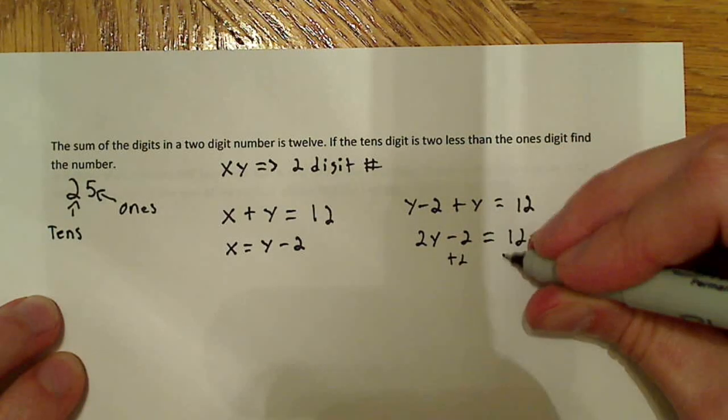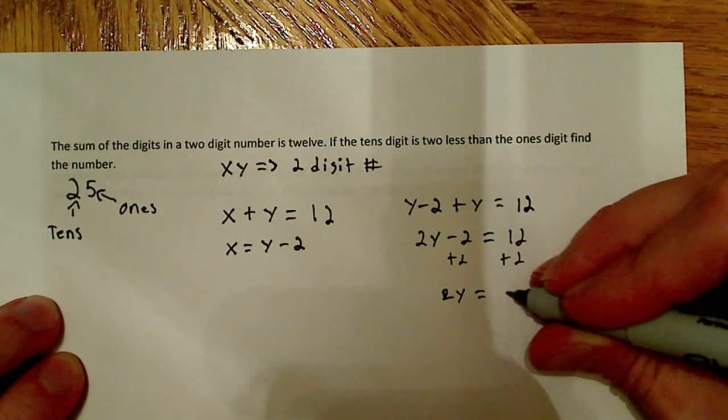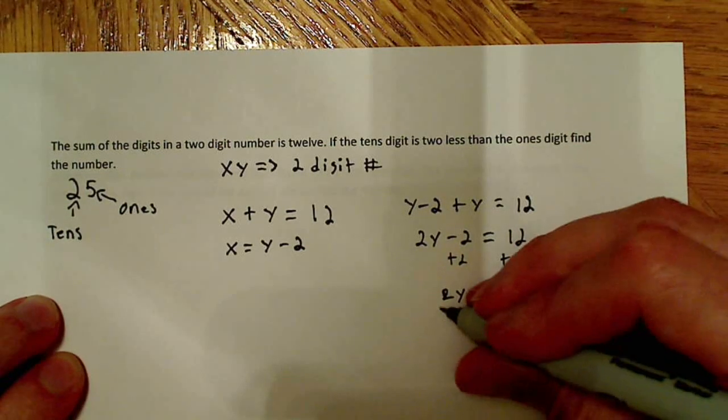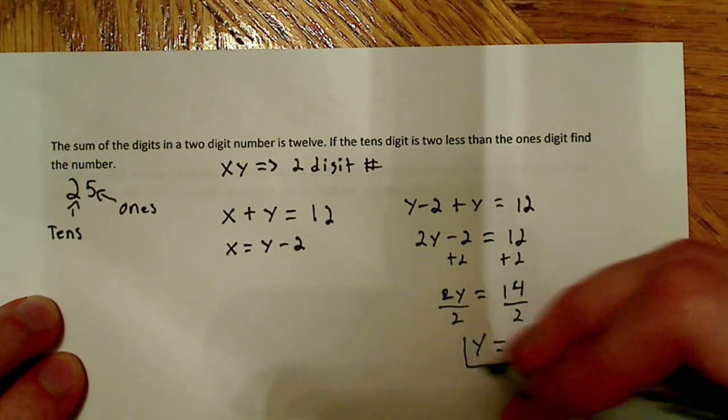Add 2 to both sides. So this gives us 2y is equal to 14. Divide both sides by 2. y is equal to 7.